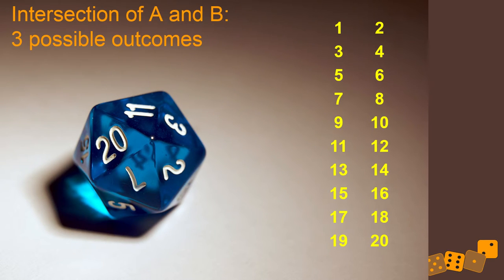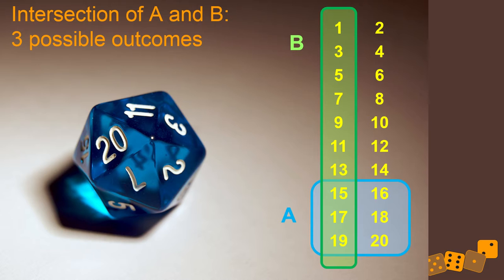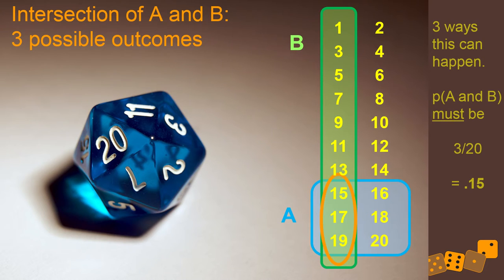So let's talk about the intersection of A and B. Intersection usually means and. There are only three things that satisfy that. There are only three outcomes that satisfy both A and B. And that's 15, 17, and 19. Those are the numbers that are both higher than 14 and odd. Three possibilities. So if we want to figure out if these things are independent, we can actually just use brute force logic to figure out what the probability is. Since there are three ways that A and B together can happen, the probability of that must be 3 out of 20 or 0.15.